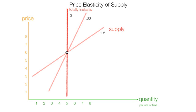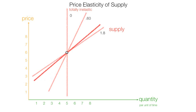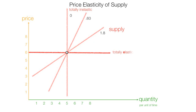What happens if supply is horizontal or flat like this — totally elastic? In this case, elasticity is infinite. It can't really be calculated. It's gigantic — enormous.